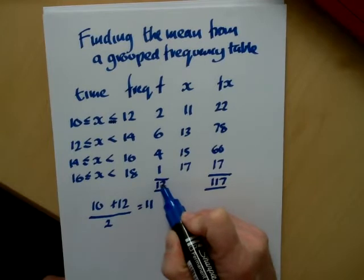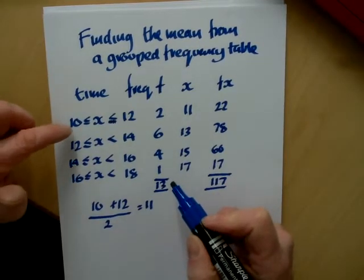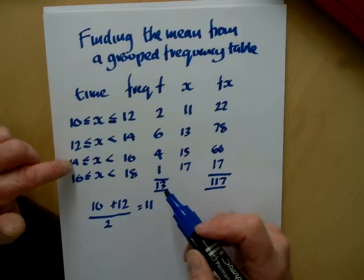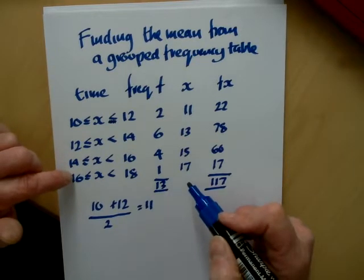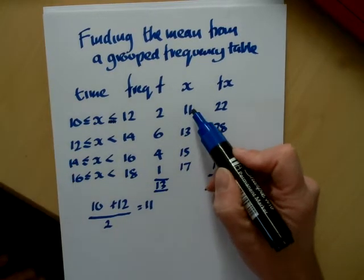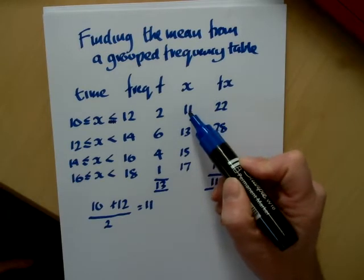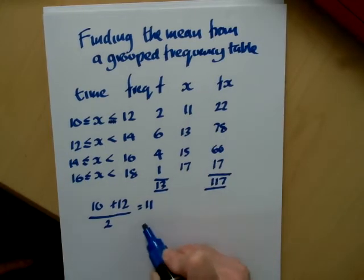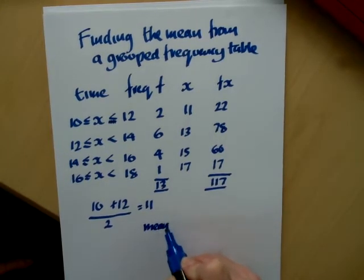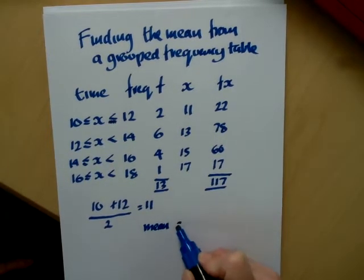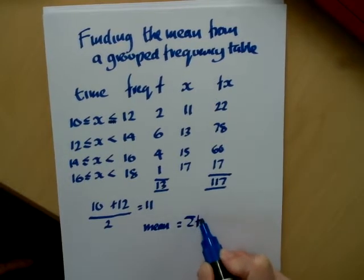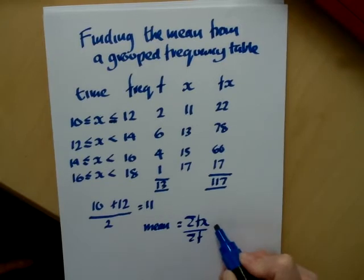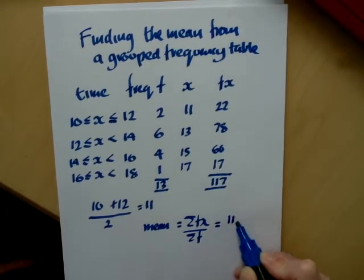So we have 13 runners: two of which ran between 10 and 12, six between 12 and 14, four between 14 and 16, one between 16 and 18. We take the midpoint as the estimate of the times. We multiply f by x to get our fx column. So our mean, the mean is what we're trying to work out from the grouped frequency table, is the sum of the fx column.